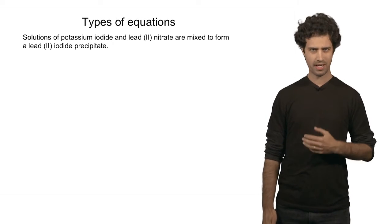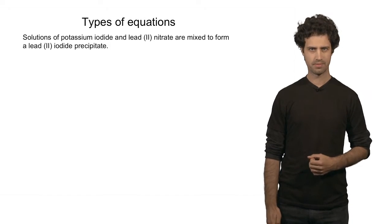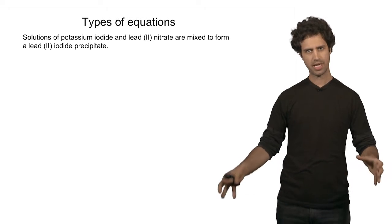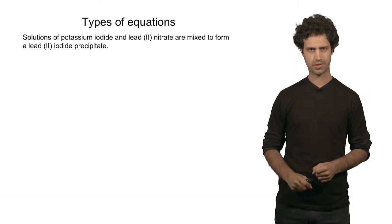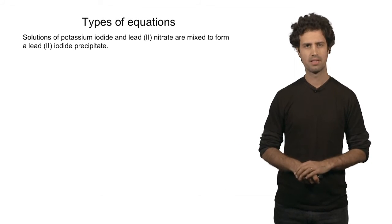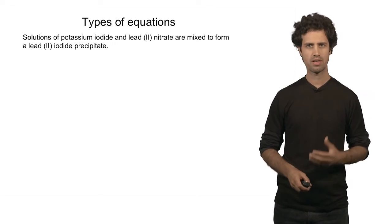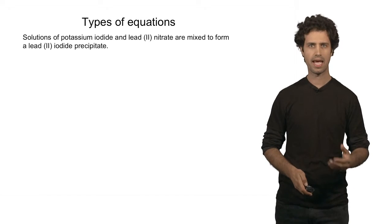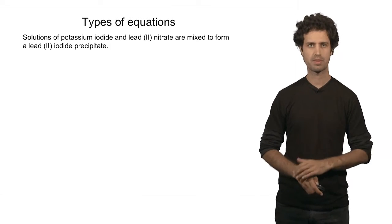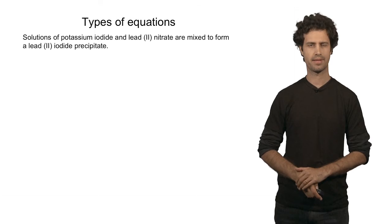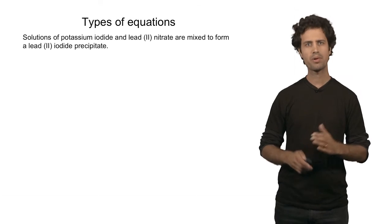Let's look at the following chemical reaction. It's a precipitation reaction. In this reaction we put together two solutions to form a precipitate. The solutions are potassium iodide and lead 2 nitrate, and they form the precipitate lead 2 iodide.